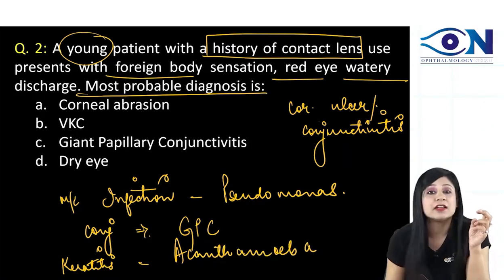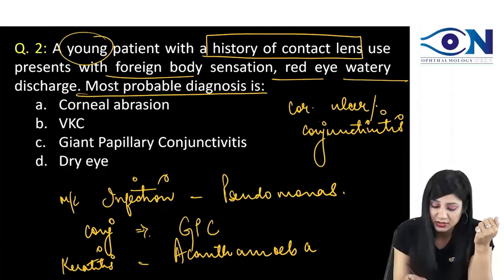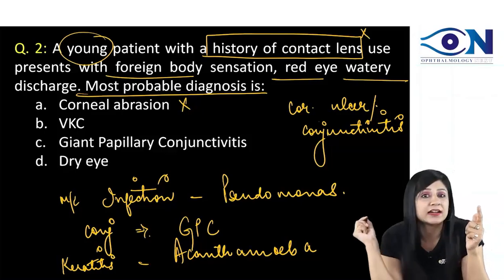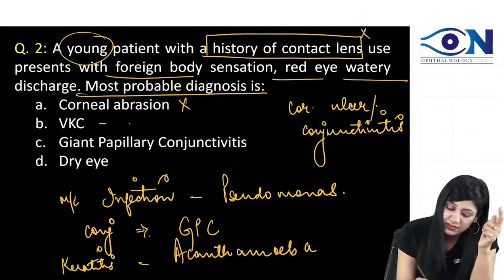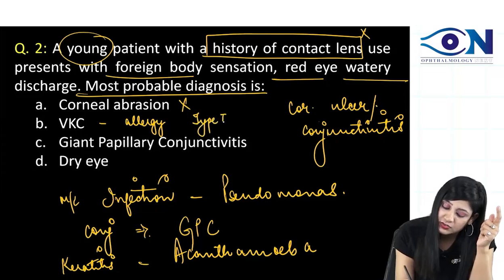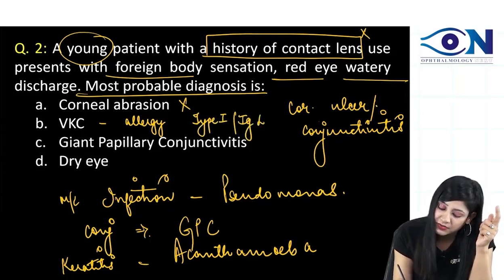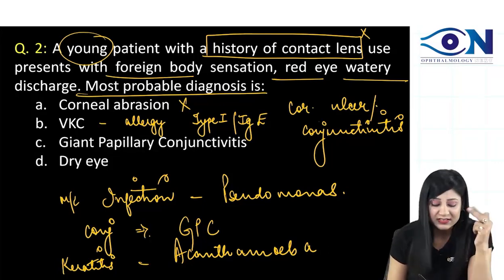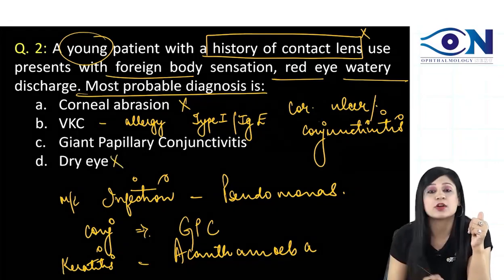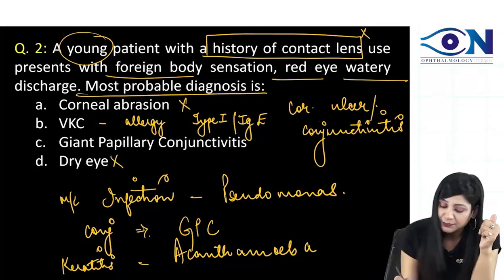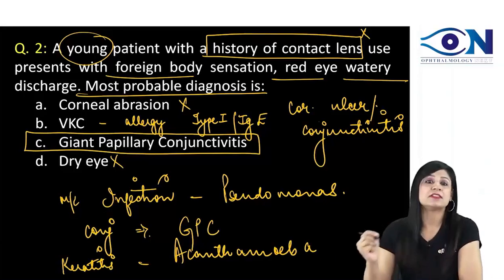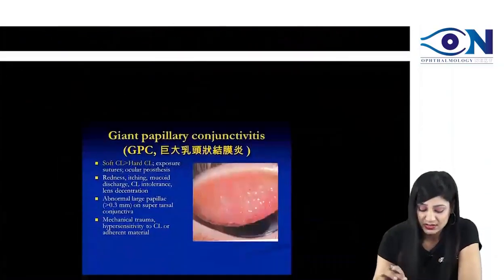Corneal abrasion is not the answer. Vernal keratoconjunctivitis is not associated with contact lens use — it is associated with allergy, specifically type 1 allergy involving IgE. Dry eye is also not associated with contact lens use. Therefore, the answer is giant papillary conjunctivitis.